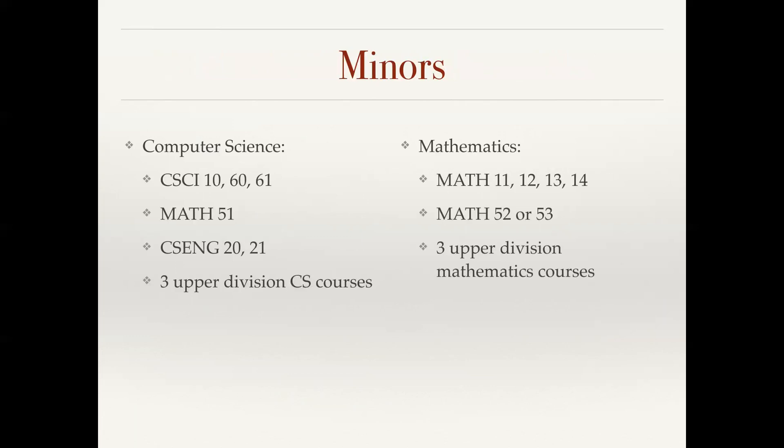We have minors in both computer science and mathematics. The students who are minoring in our subjects take a subset of the classes required for the majors. Computer science minors take the first year sequence CS10, 60 and 61, discrete mathematics, the beginning engineering classes 20 and 21, and then three upper division computer science courses. Whereas our math minors take the calculus sequence 11 through 14, and either abstract algebra or linear algebra, and then three upper division mathematics courses.